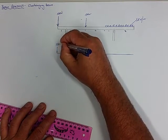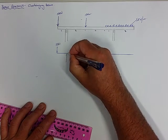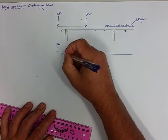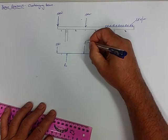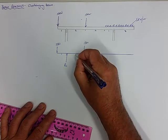So 10 kilonewtons acting there, at this point we would have our left reaction at one meter. 15 kilonewtons acting at that point, two meters in.